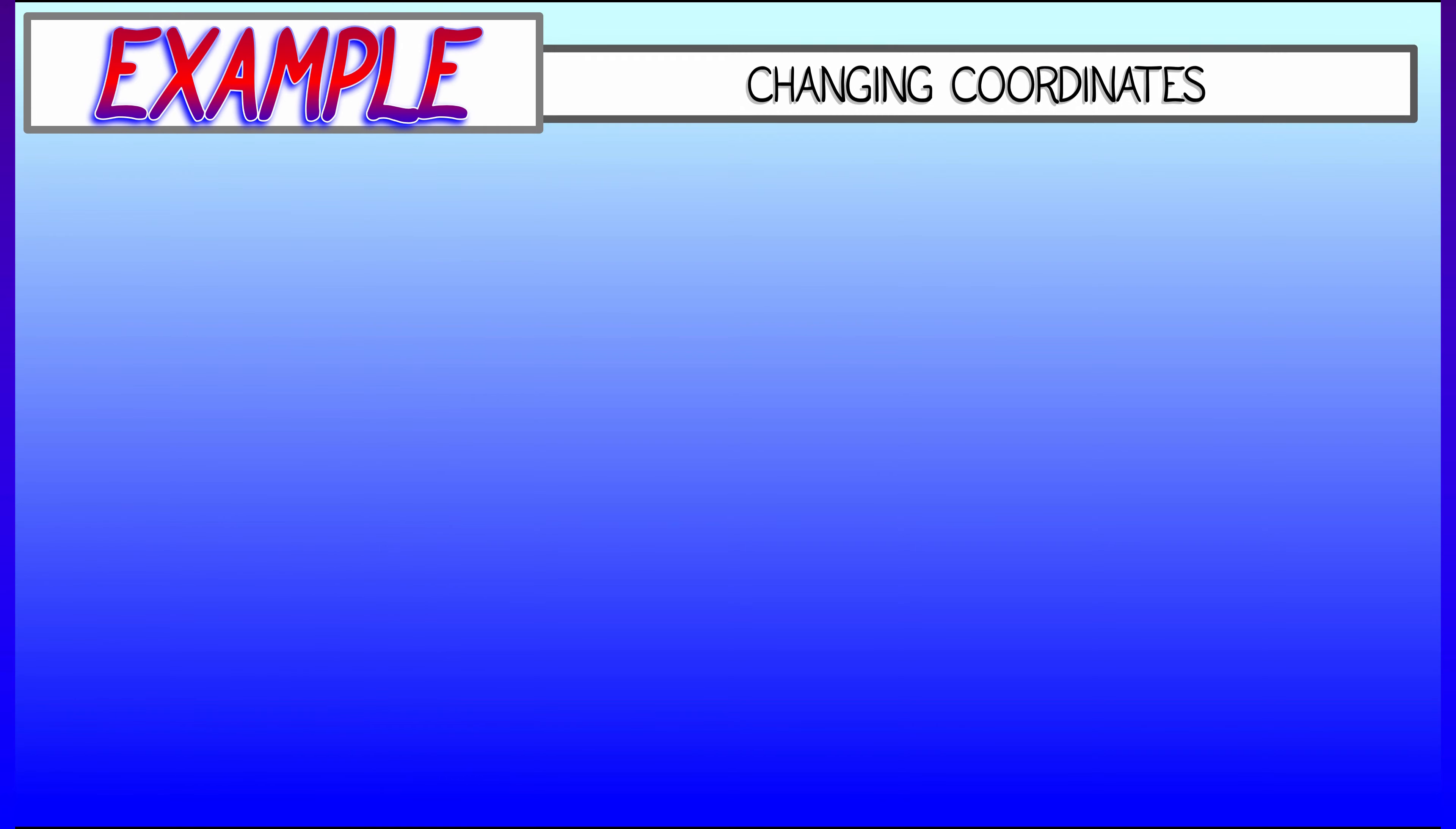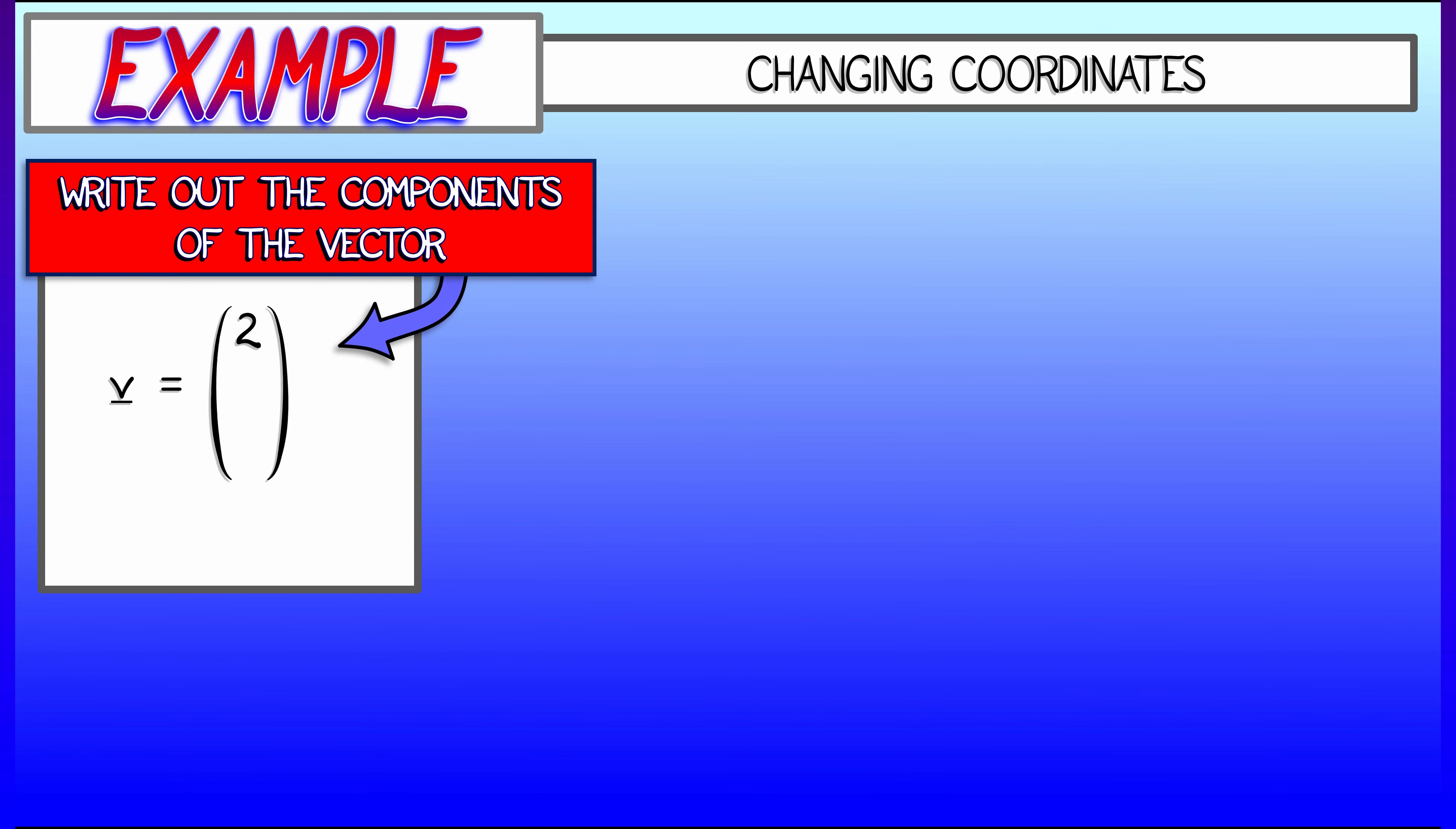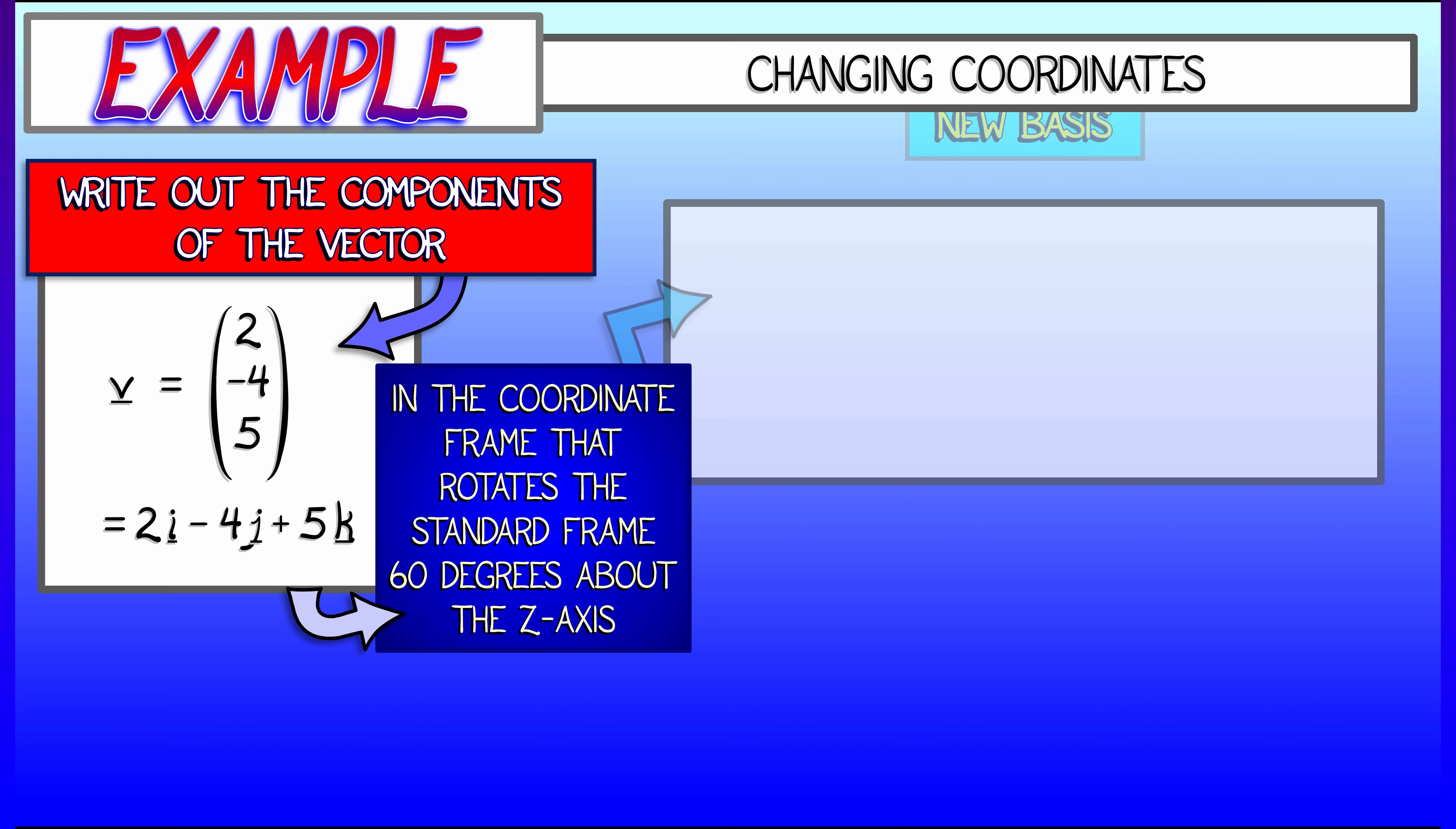Let's take a look at an example where we take a vector and rewrite its coordinates in a new basis. Consider 2i minus 4j plus 5k in standard coordinates. Now, I want to know the coordinates of this vector in a new basis, where I take the old basis and I rotate it 60 degrees about the z-axis. Let me tell you what those basis vectors are. We've got u1, u2, and u3.